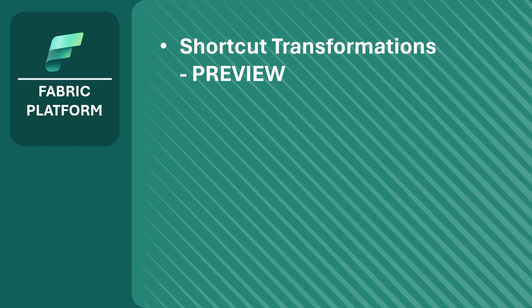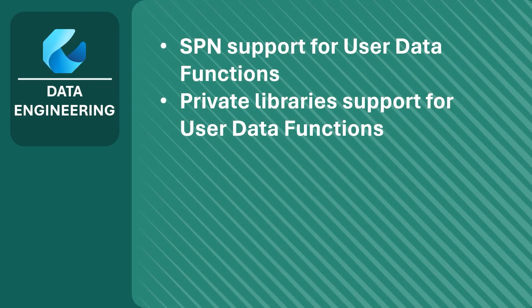Let's kick things off with the Fabric platform. This month we're announcing the preview of shortcut transformations. Shortcut transformations allow data to be transformed as it's integrated into Microsoft Fabric. This includes converting data formats to delta tables or applying AI transforms to unstructured data, such as summarizing text, translating content, or even classifying documents. This is definitely something you want to check out.